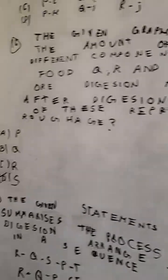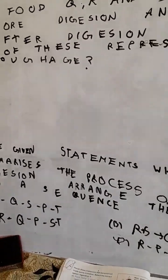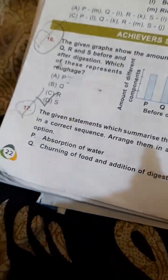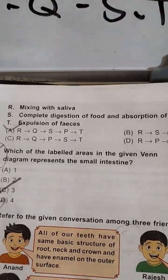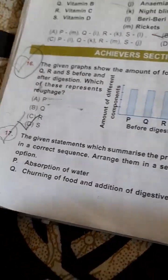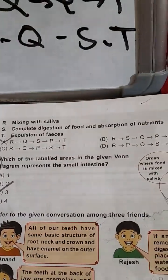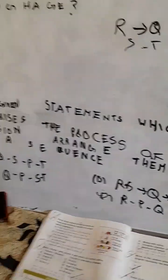The given statements summarize the process of digestion. We have to arrange them in sequence. First, R: mixing with saliva. Then Q: churning of food. Then S. After that, it's P and then T. So the correct option is option C: R, Q, P, S, T.